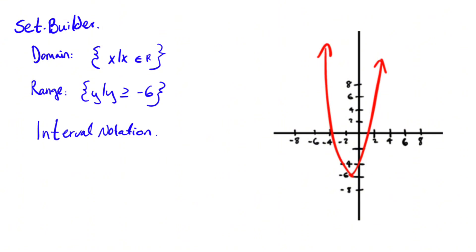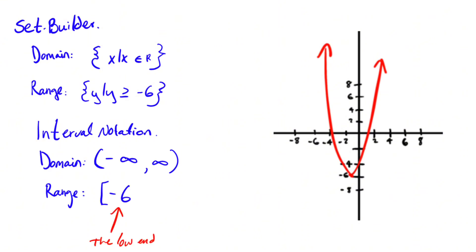Interval notation. As we've established, the domain is all real numbers. Therefore, you'd write negative infinity, infinity. The left side is the low end, so for range, you would put negative 6 on the left. On the high end, it goes on forever, so it would be infinity. Do not forget that if endpoints are not included, it will be parentheses, and if the endpoint is included, it will be brackets.